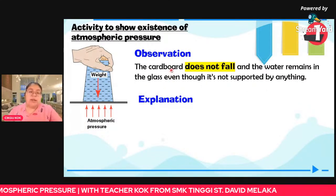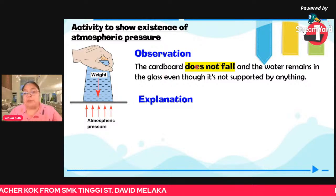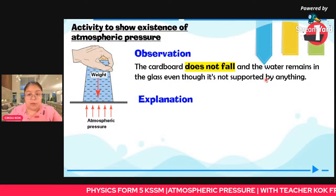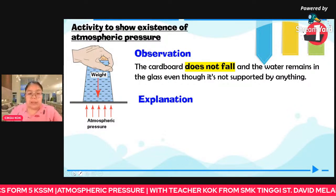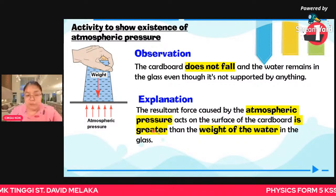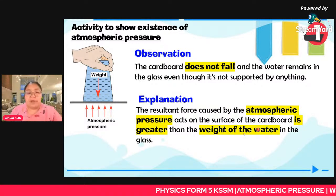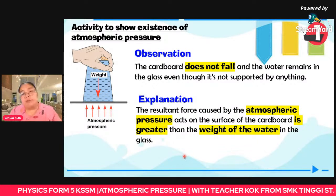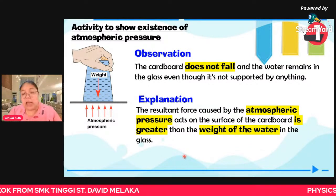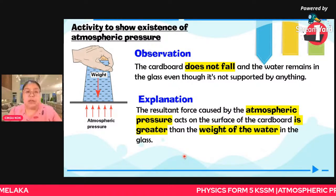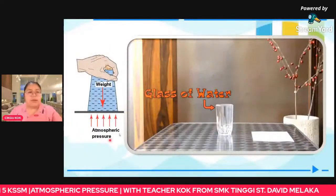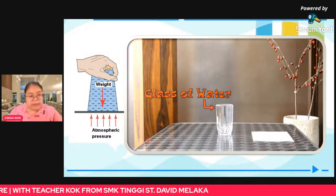Observation: the cardboard does not fall down and the water remains in the glass, even without a hand supporting it. The explanation: atmospheric pressure produces a resultant force acting on the surface of the cardboard that is greater than the weight of the water in the glass. So the force produced by atmospheric pressure is bigger than the weight of the water — that's why the water stays inside. Now we'll show a short video of this activity.